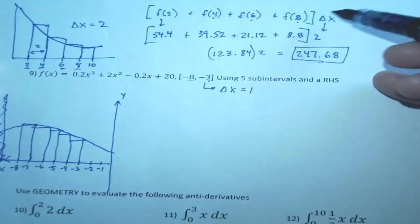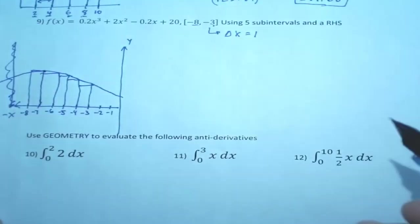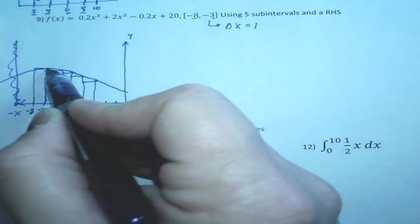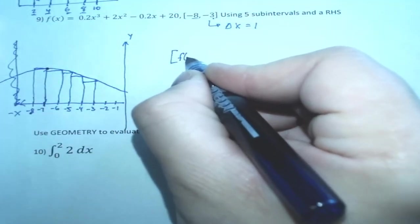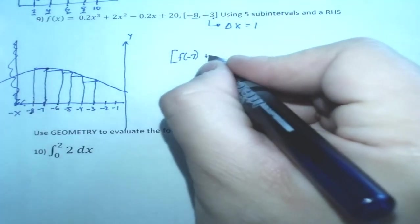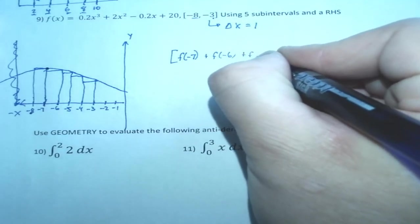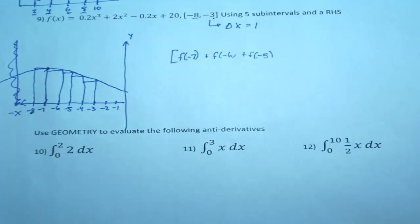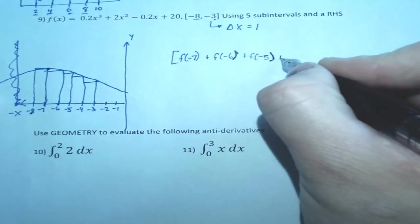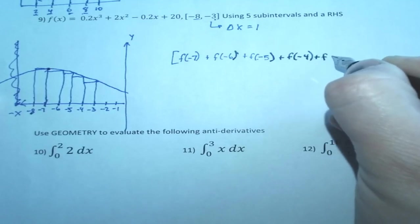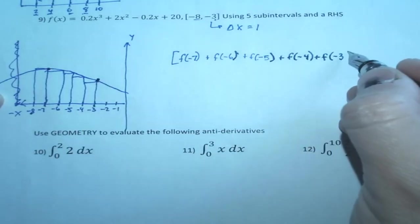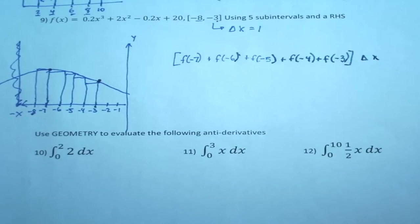Now, because I multiply delta x at the end, I can actually ignore this because it's times 1. So really, I just need to add up these heights. So what are the function values I need? So this starts at negative 8, but the bar touches at negative 7. So I need f of negative 7, f of negative 6, plus f of negative 5, f of negative 4, plus f of negative 3. Because our last bar is negative 3, the right-hand side, times delta x. And I'll throw that in there even though I know it's 1.